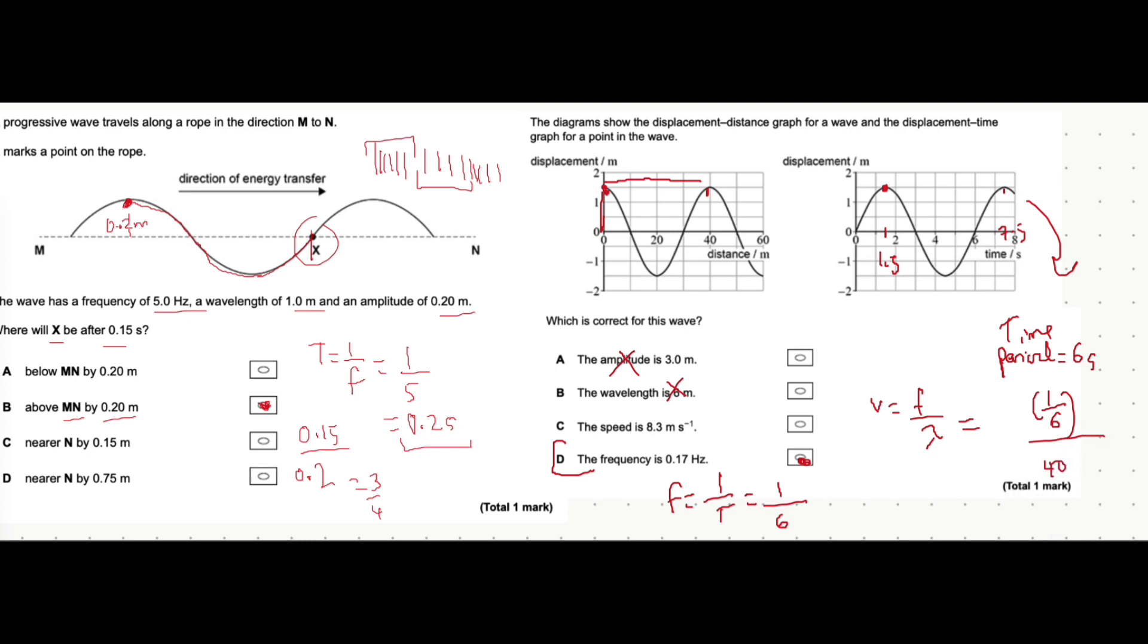Straight away, that looks a lot smaller than 8.3. It gives a value of 4.2 times 10 to the minus 3, which is a lot smaller than the speed. So this is definitely incorrect.